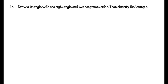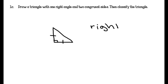Draw a triangle with one right angle and two congruent sides, then classify the triangle. When we know that the sides are congruent, we put tick marks on them to show that they're congruent, and for a right angle we always use the square symbol. It has a right angle, so it is a right triangle. And two congruent sides means that it is isosceles. So this is a right isosceles triangle.